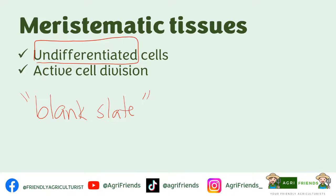Let's go back to meristematic tissues. Since meristematic tissues have undifferentiated cells, they are actively dividing tissues. This is important because it allows the plant to grow and repair damaged tissues.